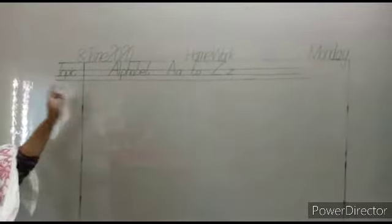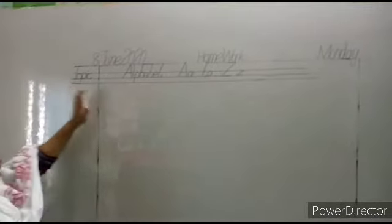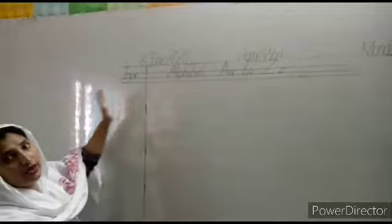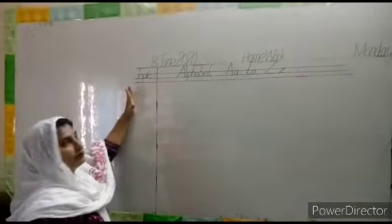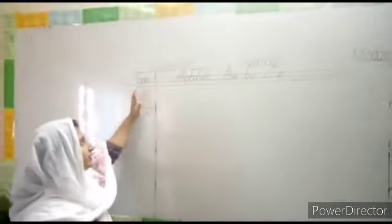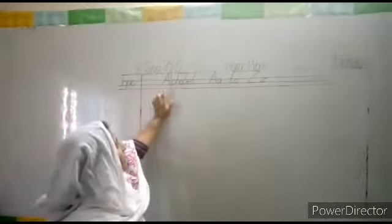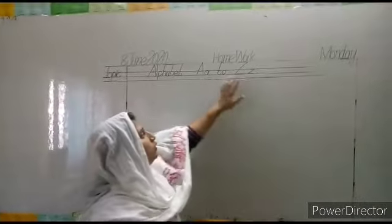Next line, come to the next line and first write down the topic. Write the topic on the left side. Second, on the next line, write alphabet A to Z. Then start your work.